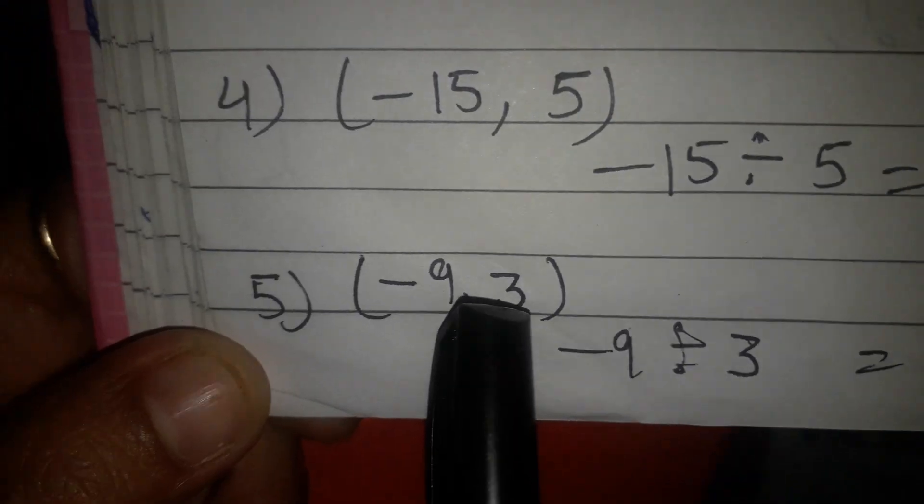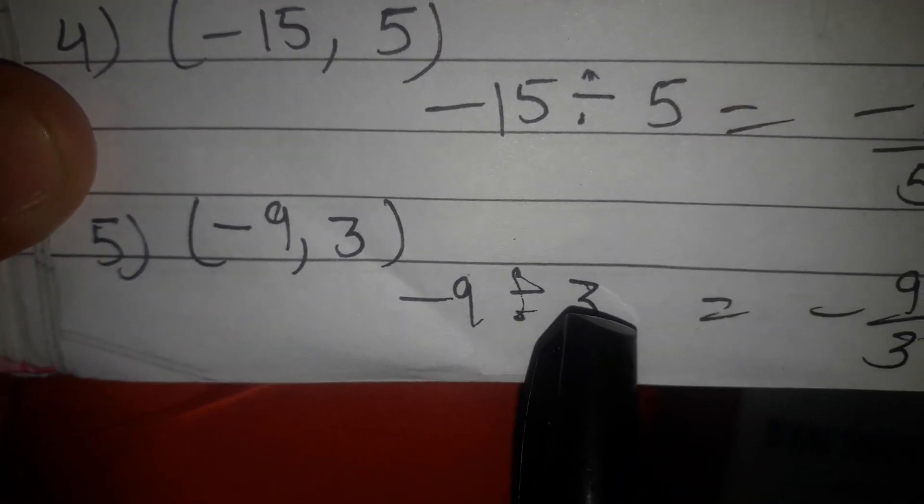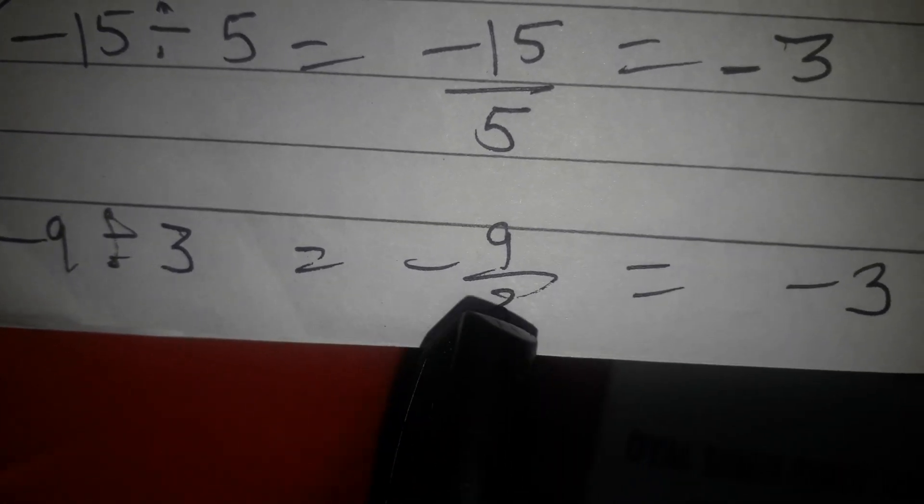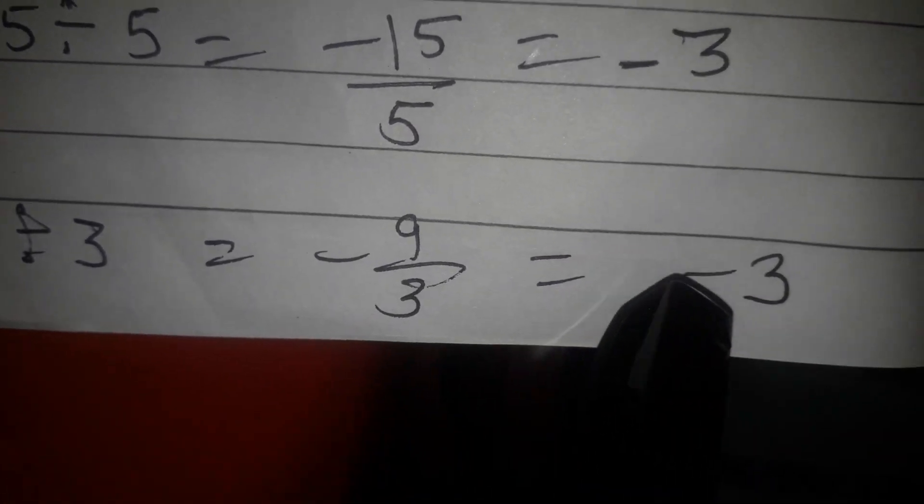Last pair is minus 9 and 3. Minus 9 is divided by 3, minus 9 upon 3. I will cancel. 3 ones are 3, 3 threes are 9. Answer is minus 3.